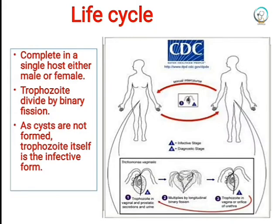Regarding the life cycle of Trichomonas vaginalis, it completes its life cycle in a single host, either male or female. Trophozoites divide by binary fission; since no cyst stage is formed, the trophozoite itself is the infective form.